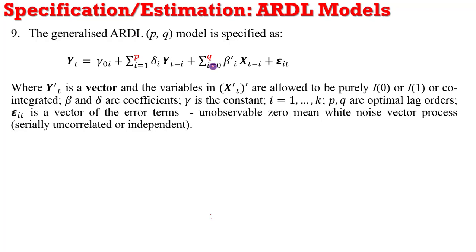Moving on to model specification: the ARDL(P,Q) model is generalized such that YT, the dependent variable, is explained by its own lags and also the current and lagged values of the regressors. The lags are denoted with P and Q — P is associated with the lags of the dependent variable, while Q represents the lag orders of the regressors. So you often see the ARDL model specified as ARDL(P,Q).